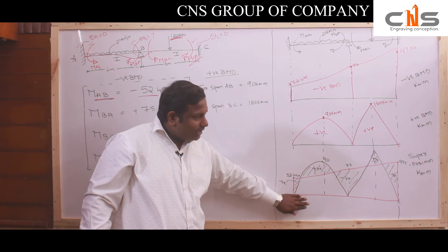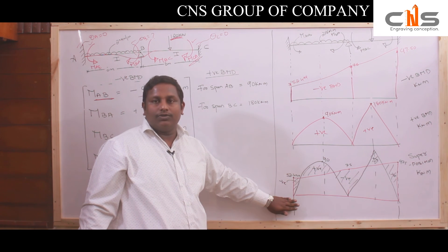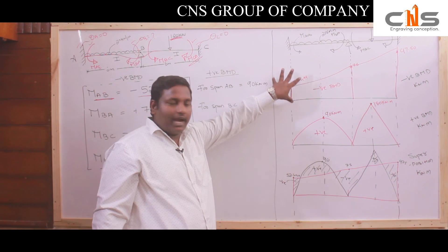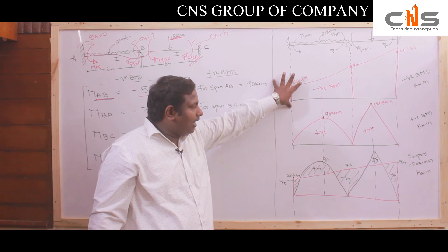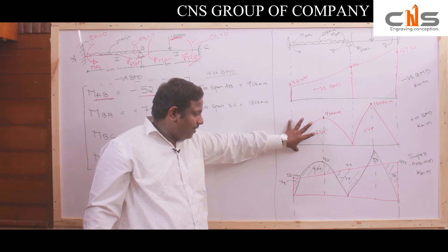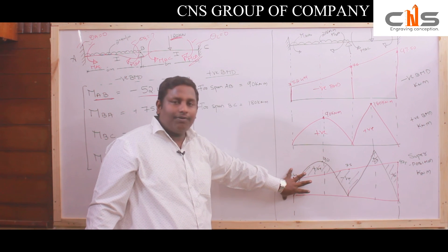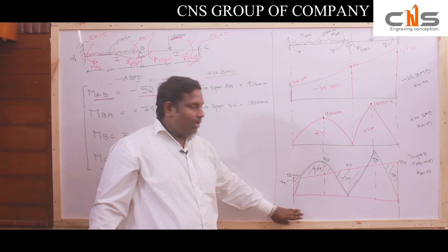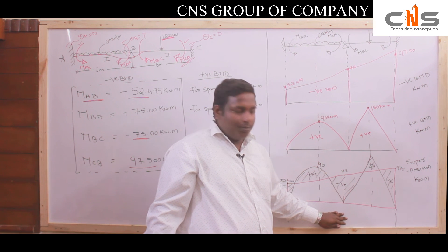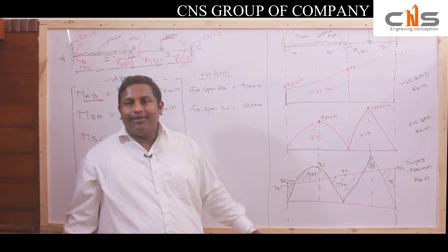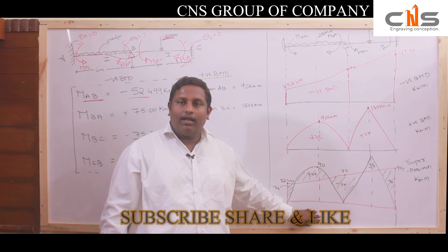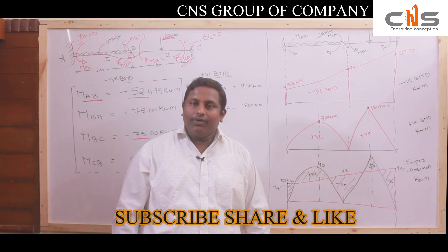In the next problem we will solve for the shear force diagram (SFD) as well. To summarize: once we obtain the end moments giving the negative bending moment diagram and positive bending moment by treating each span as simply supported, the superposition of both gives the resultant bending moment. Please like, share, and subscribe to the channel. We will meet in the next video — thank you.